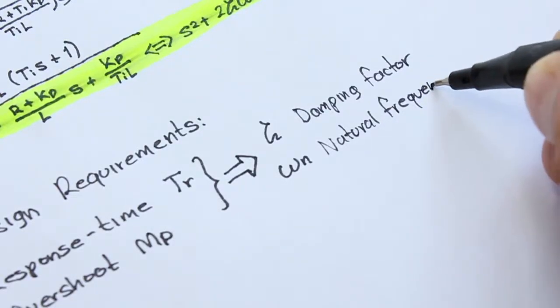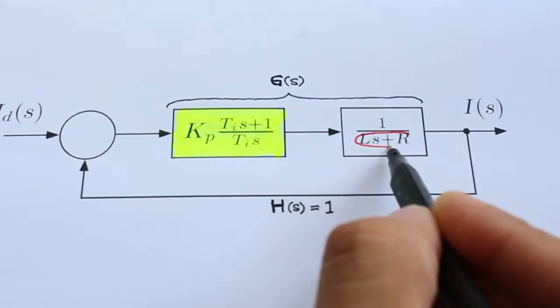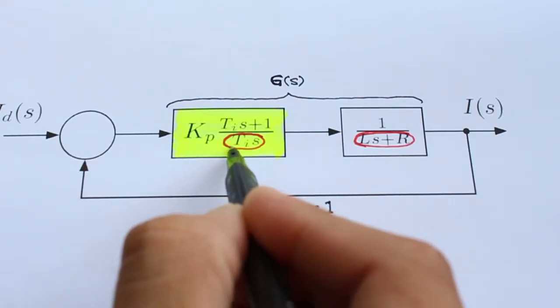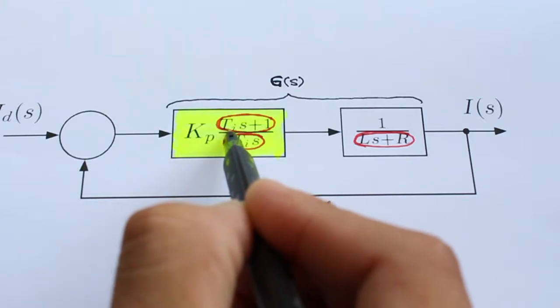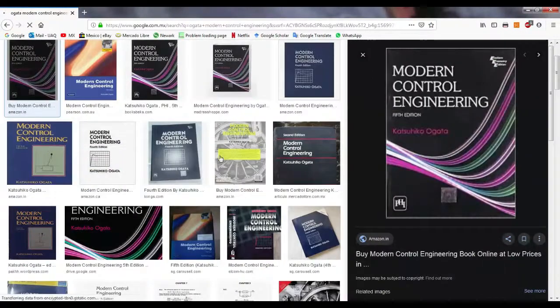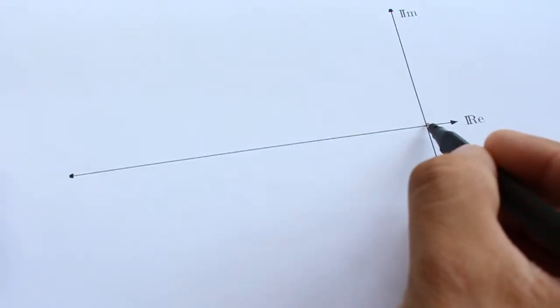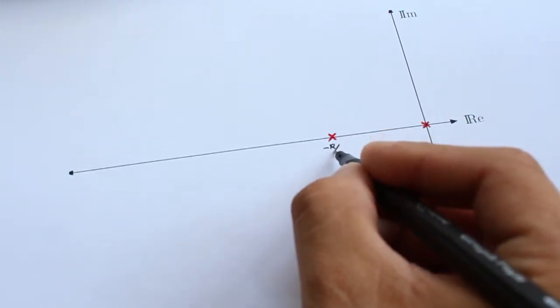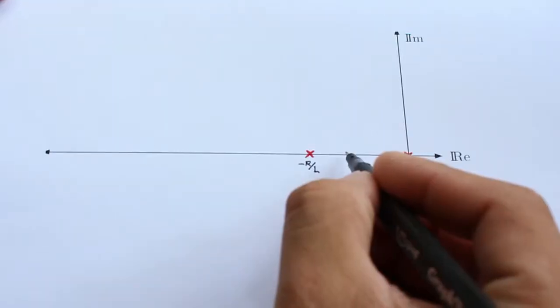Well, we have to take a look at the root locus. To draw the root locus of the closed-loop transfer function, it is necessary to locate the open-loop poles and zeros. If you are unfamiliar with this subject, take a look at Ogata's book, Modern Control Engineering. We have a pole at the origin introduced by the controller, a second pole due to the plant located at minus R over L, and a zero which can be moved with the Ti constant.